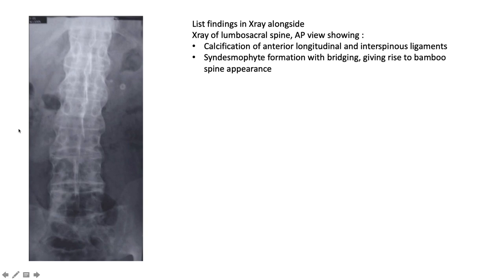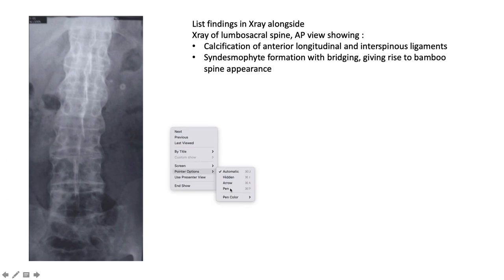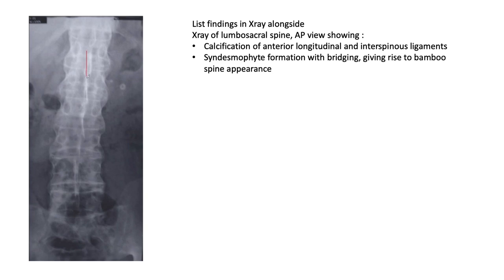Moving on to spinal X-rays: here we see calcification of the anterior longitudinal ligament and interspinous ligaments, with syndesmophyte formation and bridging, giving rise to the bamboo spine appearance. This speaks to ankylosing spondylitis.